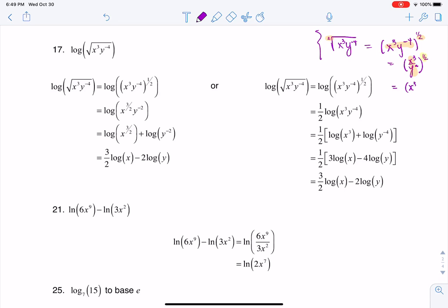So I could say this is x cubed to the 1 half, and this could be y to the fourth raised to the 1 half. And then when you have powers raised to powers, you would multiply those exponents. So you could actually go as far, if you wanted to, to say this is x to the 3 halves over y squared.